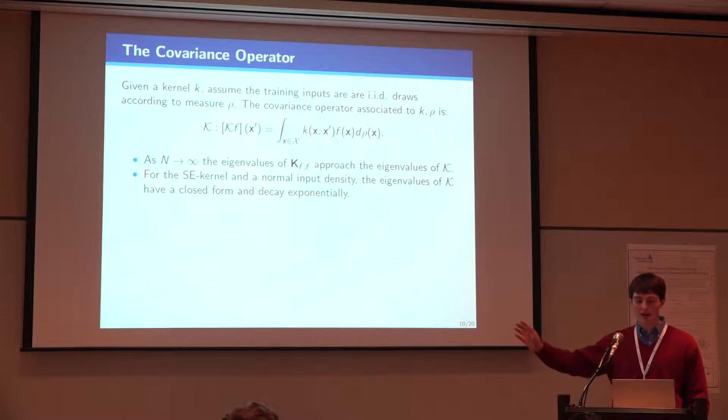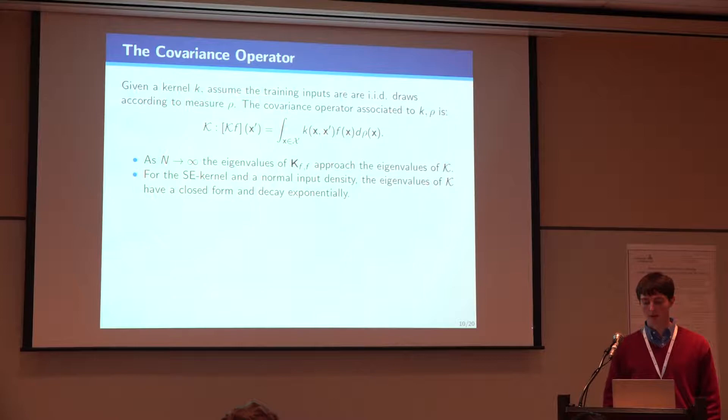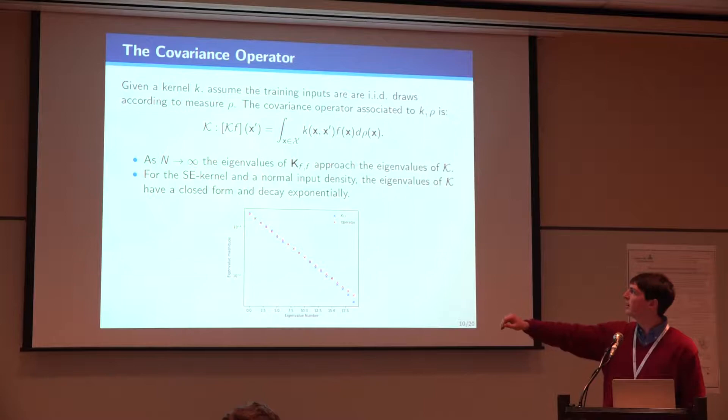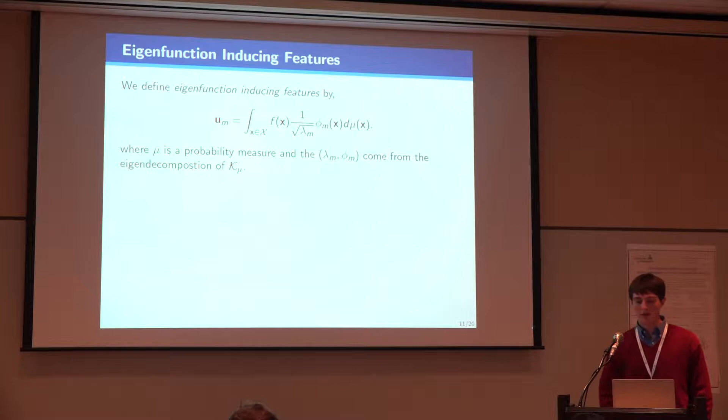For a squared exponential kernel, we can actually write down what the spectrum of this operator looks like, if the data is normally distributed. And in that case, the eigenvalues decay exponentially. So that's the quintessential example in what we prove things for. So you can see that this data set only had 200 data points, but you can see already the eigenvalues of the empirical covariance matrix line up pretty well with the theoretical eigenvalues. And this is on a log linear scale.